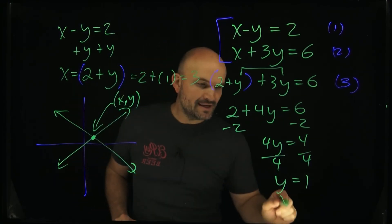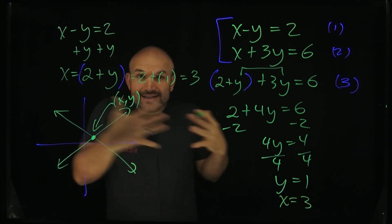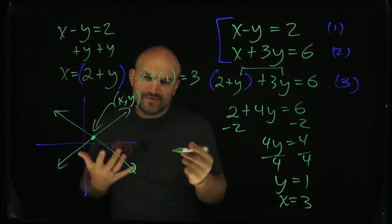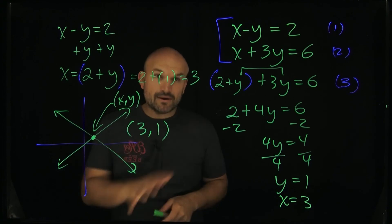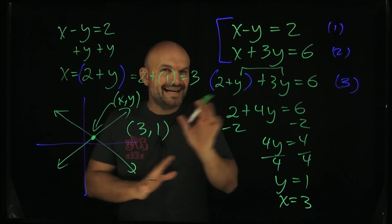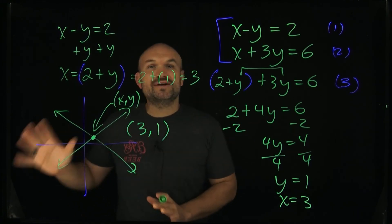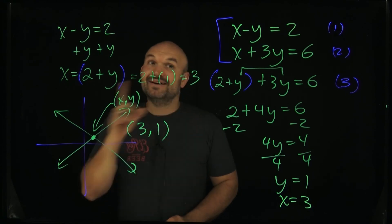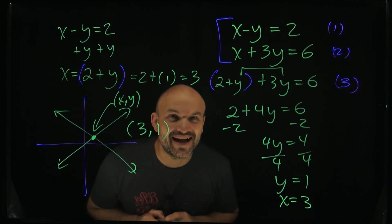So y equals one, x is equal to three, and if you wanted to use this as a coordinate point, then you could simply just write this as (3, 1). Now overall, this example was easy, and I did that for a reason. But if you want to be able to learn how to solve simultaneous equations that are not linear, then go and check out the next video I have for you here.